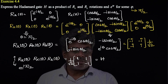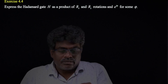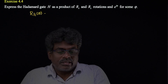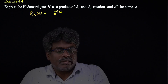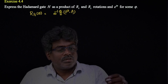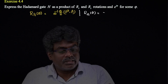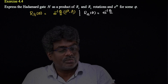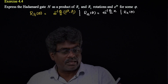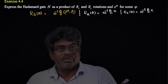We can also solve this problem another way. Defining the general rotation operator about an arbitrary direction n̂ through angle θ as e^(-iθ/2 · σ·n̂), the rotation about z-axis is Rz(θ) = e^(-iθ/2 · Z) and the rotation about x-axis is Rx(θ) = e^(-iθ/2 · X).